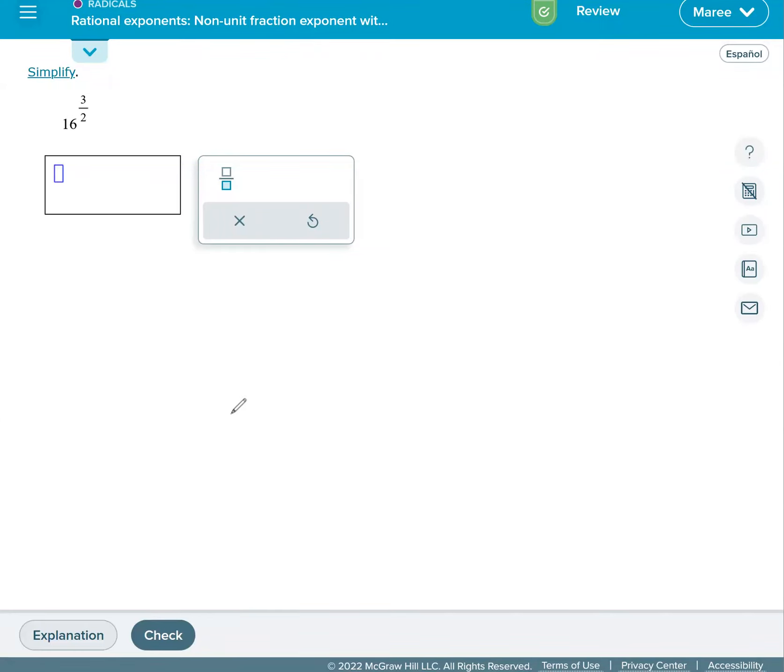This topic is rational exponents. Rational exponents just mean you're going to have a fraction for your exponent. It's a non-unit fraction exponent with a whole number base, so you have a fractional exponent.